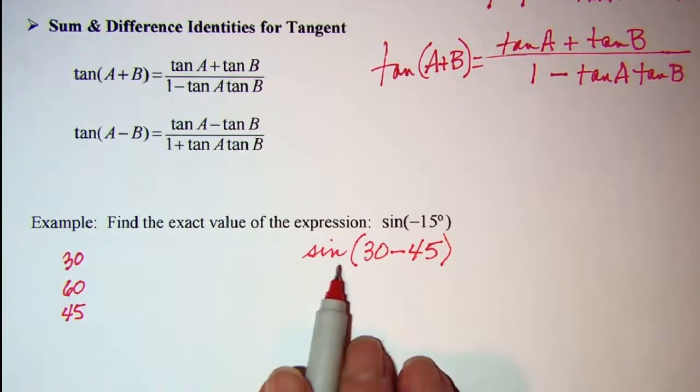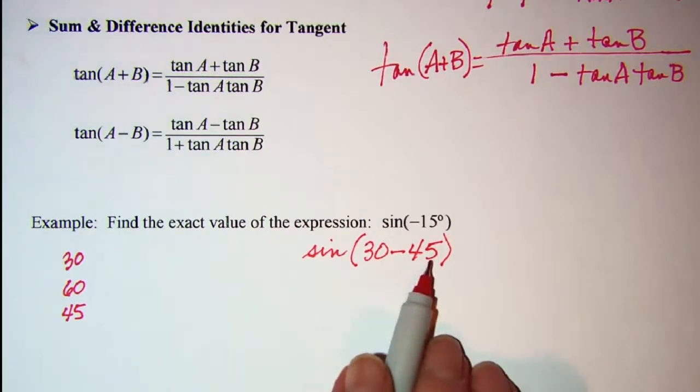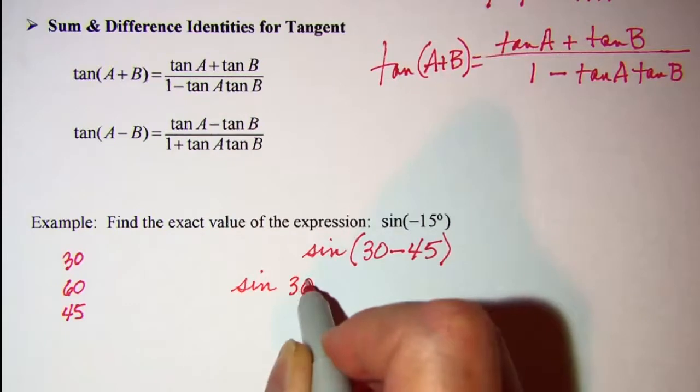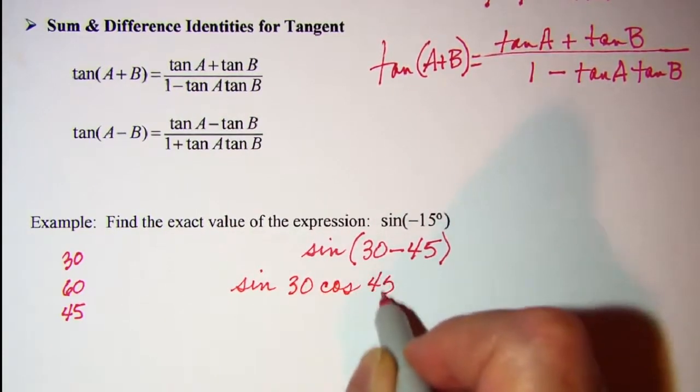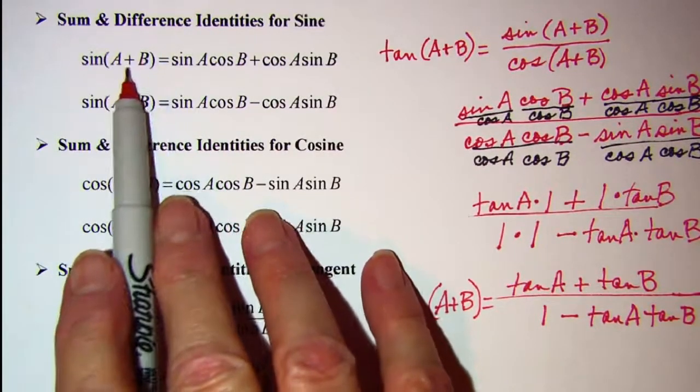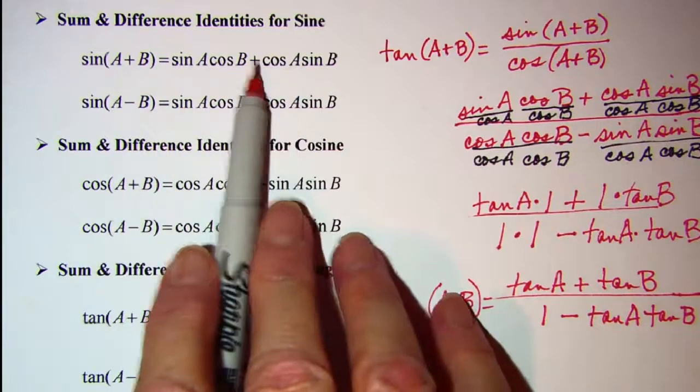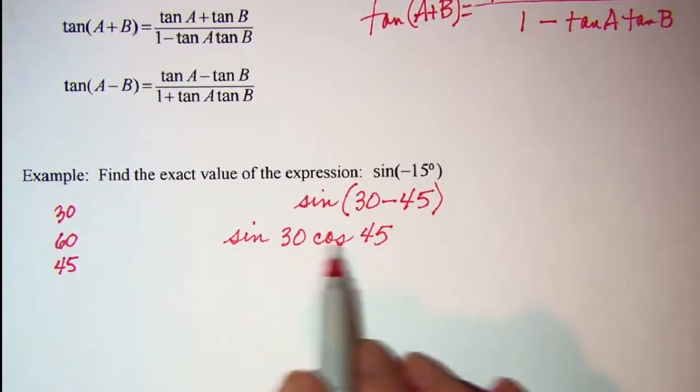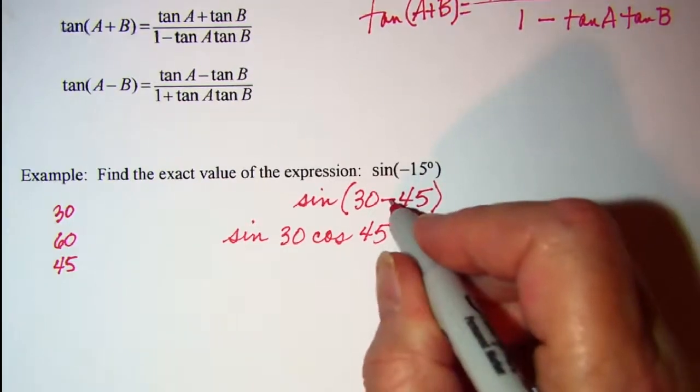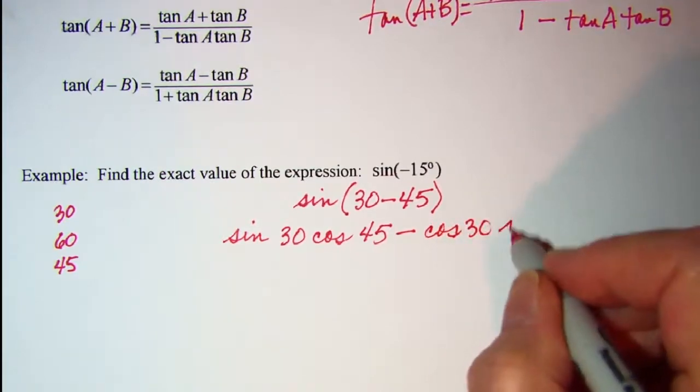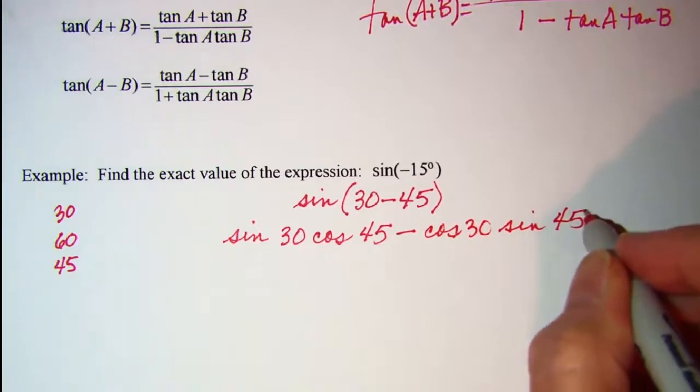The sine of 30 minus 45 is sine 30 cosine 45. And remember with the sine identities, if it's a plus here for the two angles, it's going to be a plus in between the two products. So sine 30 cosine 45, and minus here, so it will be minus, and then cosine 30 and sine 45.